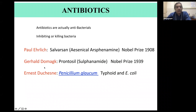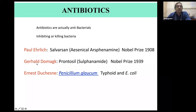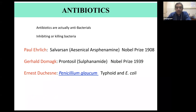Before penicillin, there was also the sulfa drug — a very commonly used antibiotic. It was discovered by Domagk, who won the Nobel Prize in 1939 for discovering the sulfonamide class of antibacterials, made famous under the name Prontosil.